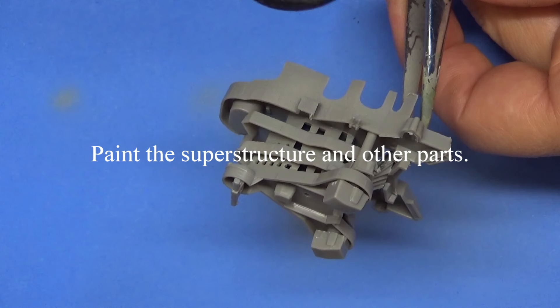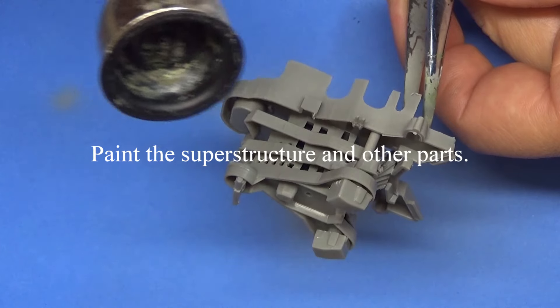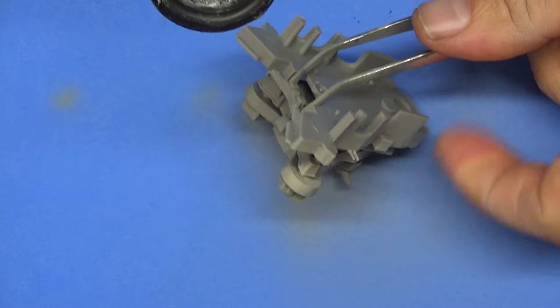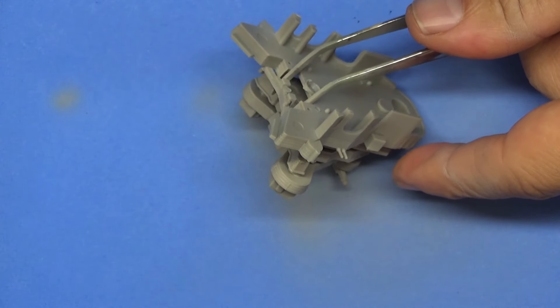We are going to be painting the rest of the superstructure, the miscellaneous parts. We're going to assemble the superstructure and all that good stuff and the turrets.